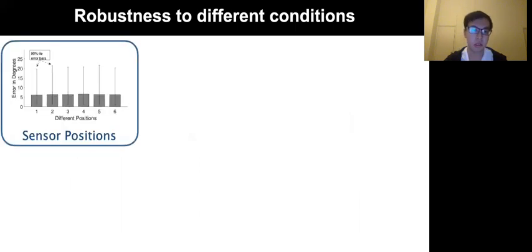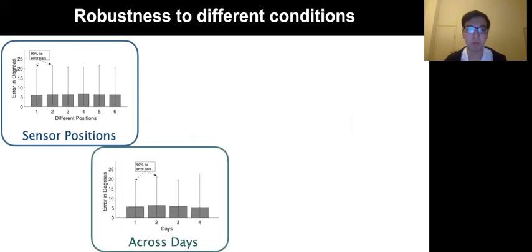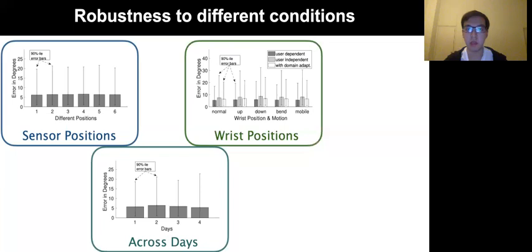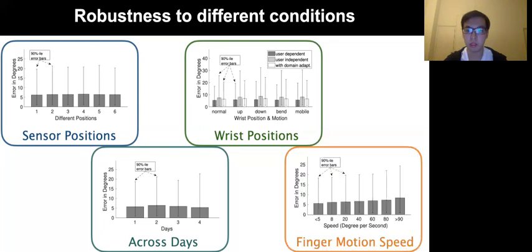Also, our system shows robustness to different conditions, including sensor position changing within a day and sensor position changing across days. We also show robustness to wrist position changing, including configurations of normal, up, down, bending, and even mobile containing rotations. It also shows graceful degradation in accuracy over finger motion speed.